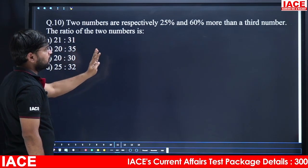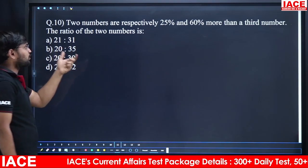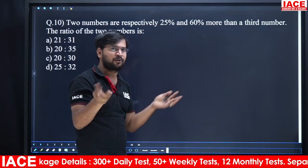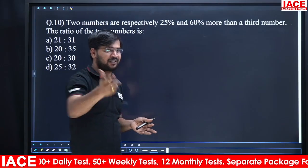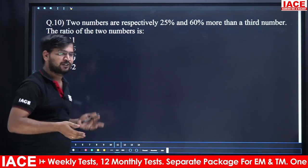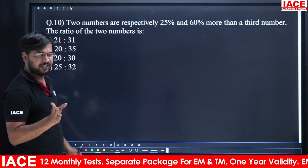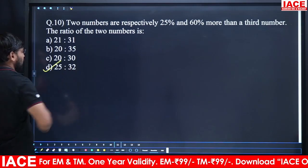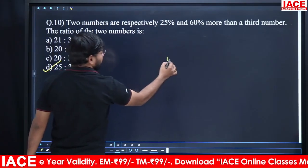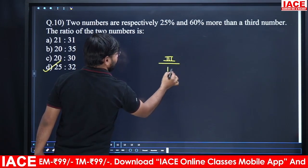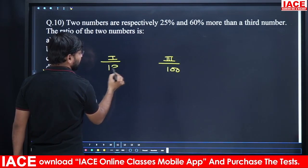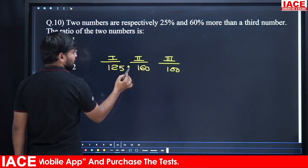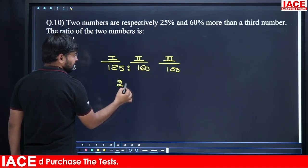Two numbers are respectively 25% and 60% more than a third number. I don't know the third number so I assume it is 100. First number = 125, second number = 160. Ratio = 125:160 = 25:32. Option D is the right answer.